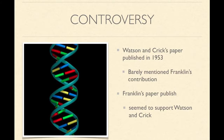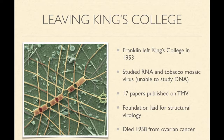In the same journal that Watson and Crick's paper was published in, Franklin's paper was also published — but because it was published after Watson and Crick, it seemed to just support their paper instead of being the forerunner of the research. It was also in 1953 that Franklin left King's College due to the controversy over the DNA discovery; she was actually forbidden to study DNA any further. So she turned her focus to RNA and the tobacco mosaic virus, ultimately publishing 17 papers on it.